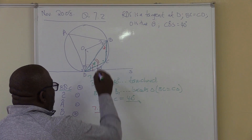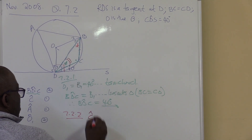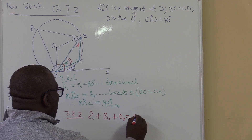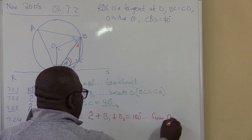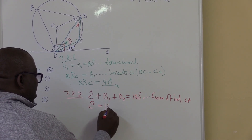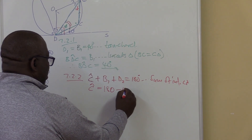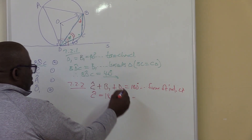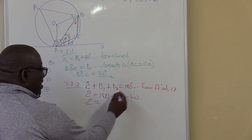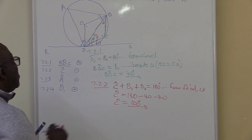So angle C will equal 180 minus B1 minus D2. What is B1? B1 is 40 degrees. What is D2? D2 is also 40 degrees. So we've got 180 minus 80. Angle C equals 100 degrees. That's the value of angle C — it is 100 degrees.